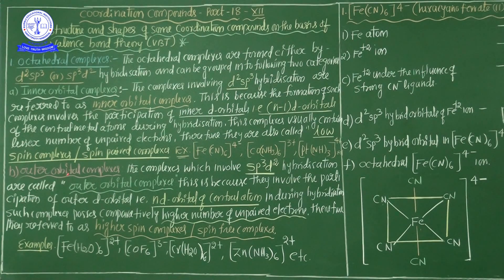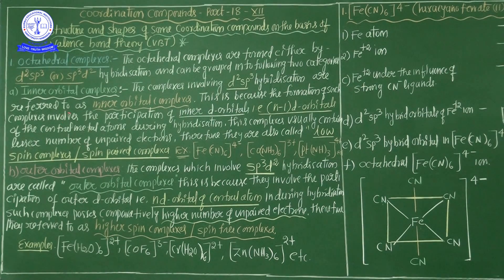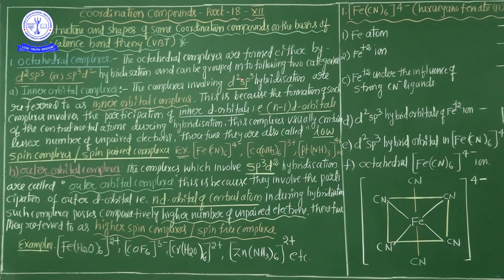Either inner orbital or outer orbital involvement in hybridization leads to octahedral complexes. In d²sp³ hybridization, 2 D orbitals, 1 S orbital, and 3 P orbitals intermix to form new hybrid orbitals. In this case, the D orbital is first involved in hybridization, hence the name d²sp³.